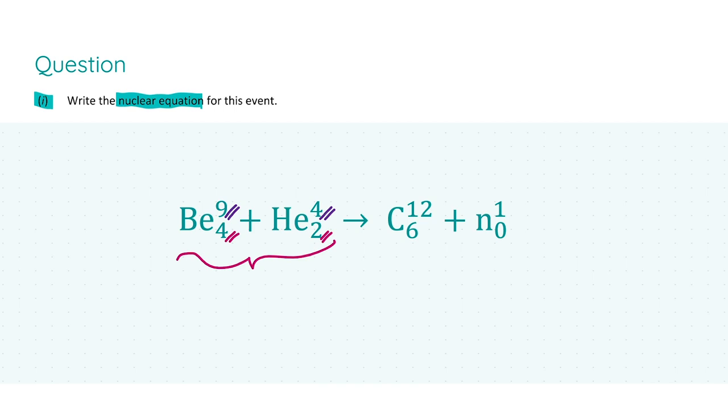We are told that a neutron was emitted, so on the right-hand side of the equation we must include it as you can see here. The neutron does not change the overall atomic number on the right-hand side, so we need an element with atomic number 6 to balance the equation. Therefore, the only element which satisfies this equation is the carbon-12 atom. The mass numbers are 13 on both sides, and the atomic numbers equal on the left and right-hand sides, balancing the equation.